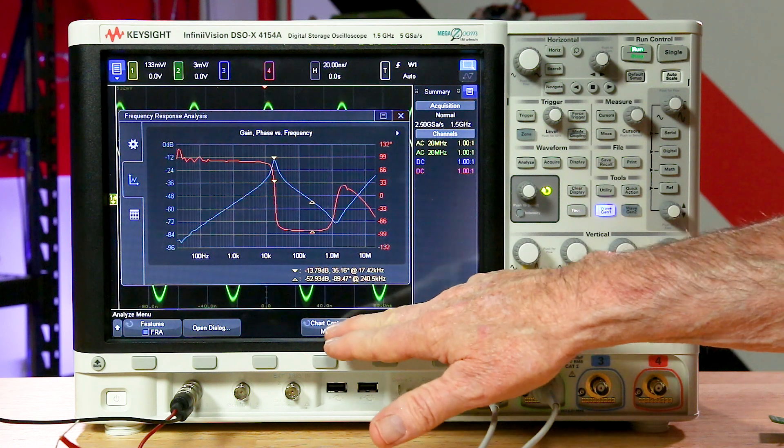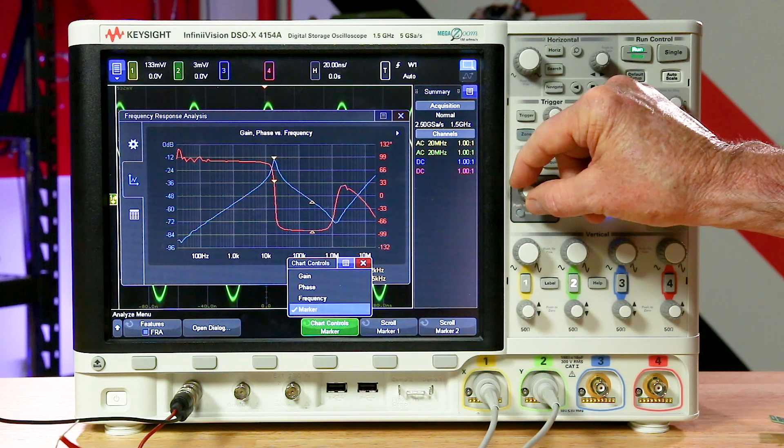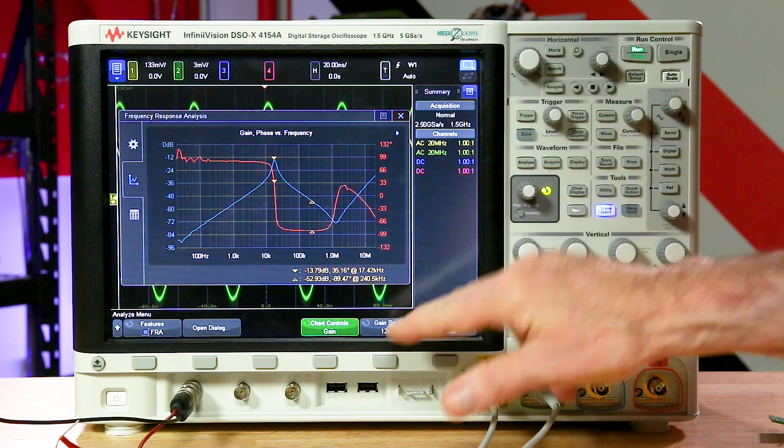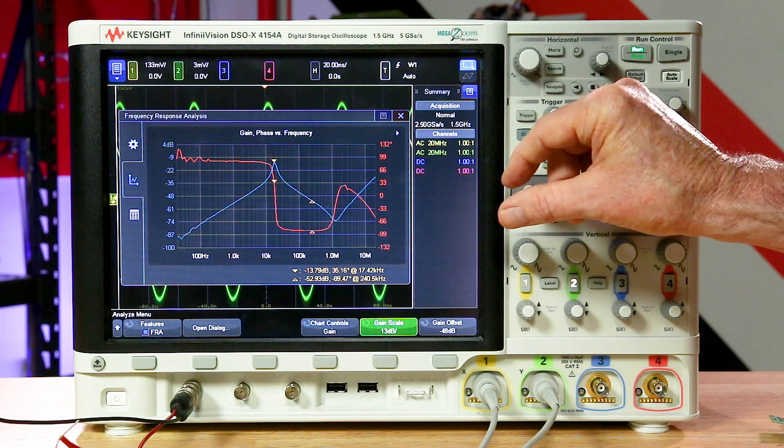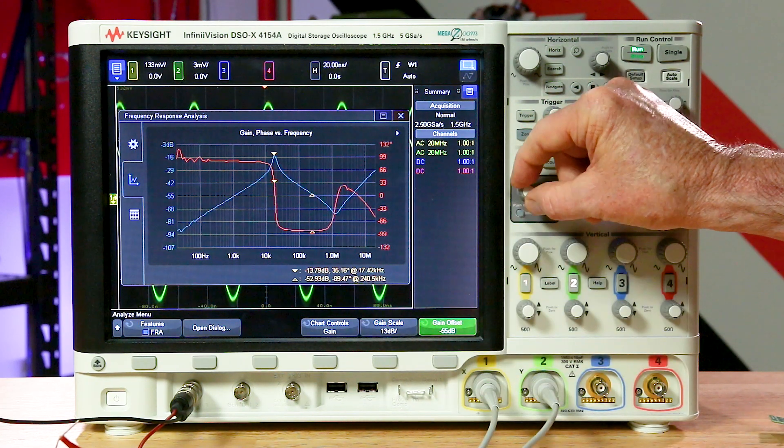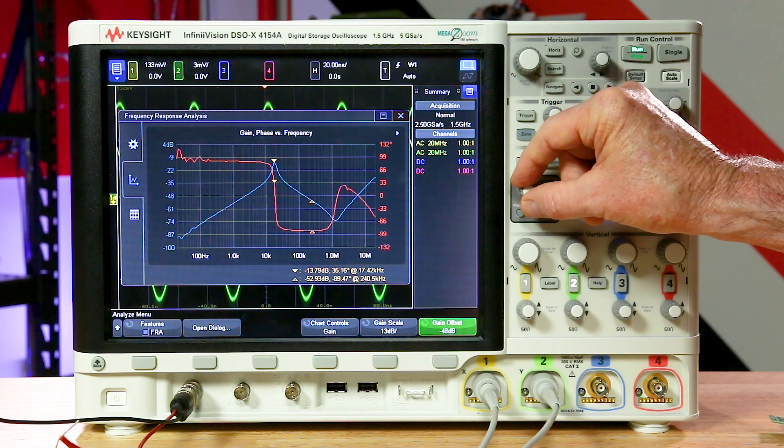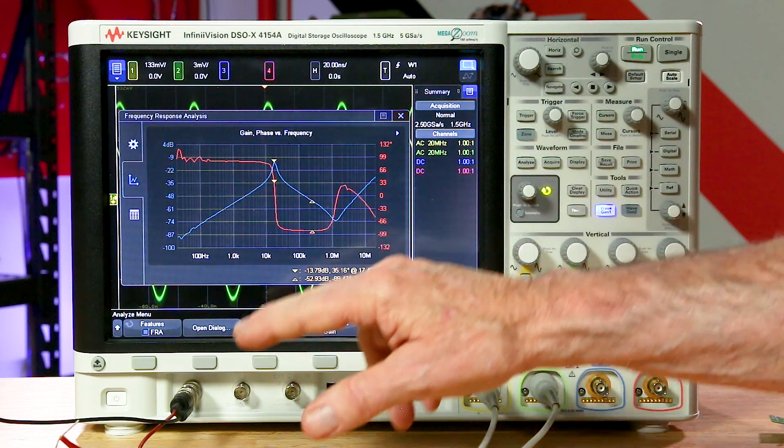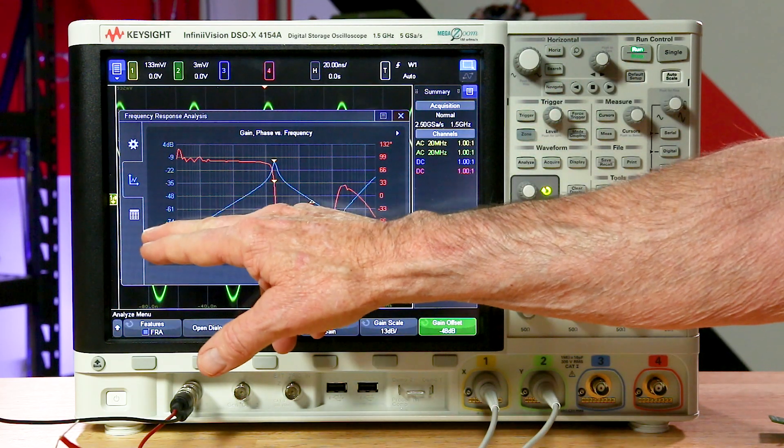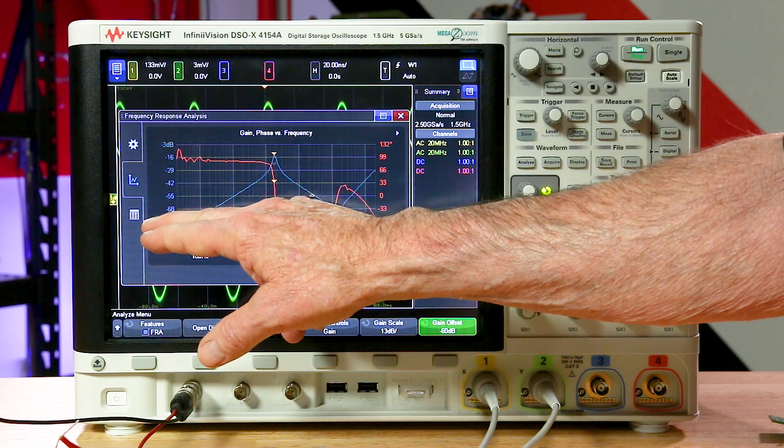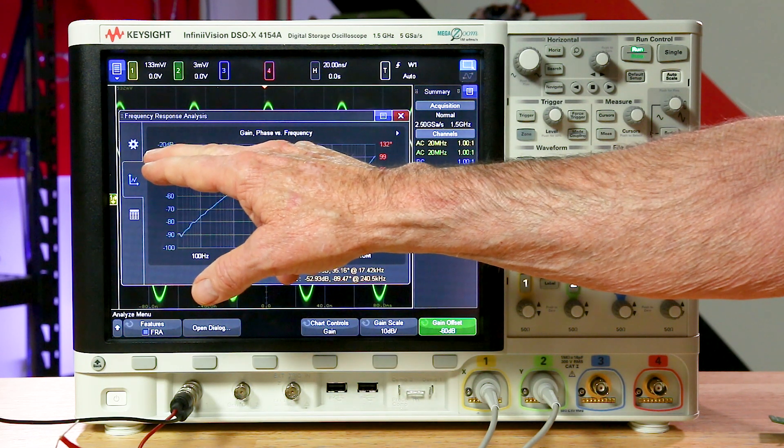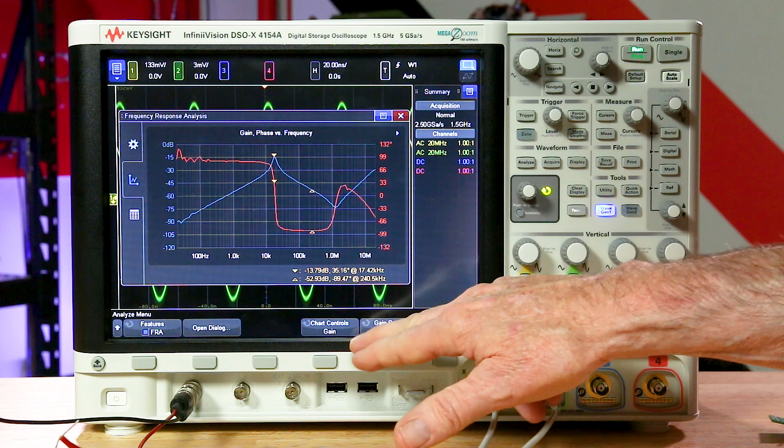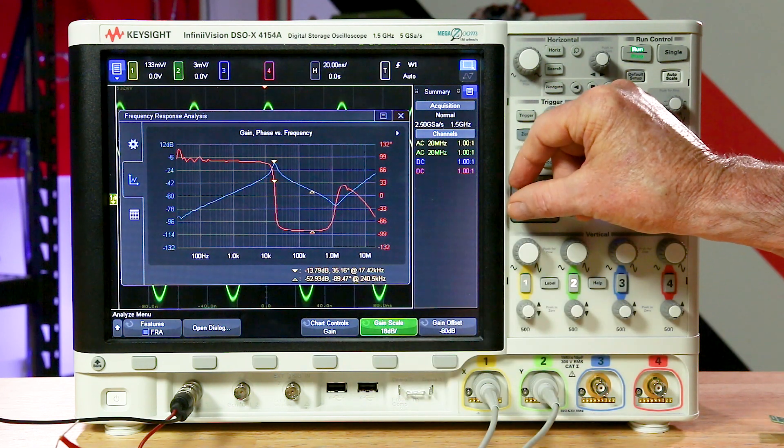You can also control gain and phase. Let's go to gain, and you can control the offset, and you can do the same thing with phase. It used to be somewhat hidden, and you can still do it. You can control it by dragging up and down, but you don't have as fine a control if you're looking for a set number of dB per decade.